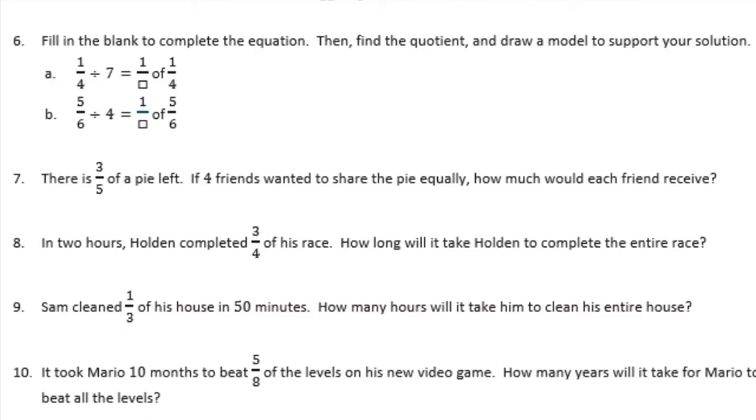Number 6: Fill in the blank to complete the equation. Then find the quotient and draw a model to support your solution. Part A: 1 fourth divided by 1 seventh. Remember this from a few lessons ago, so we can turn 1 seventh, or turn 7 into 1 seventh. And then of means times. So 1 seventh times 1 fourth is 1 28th.